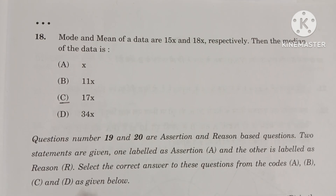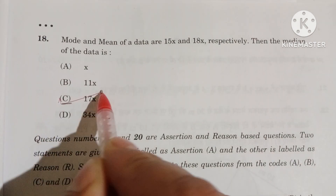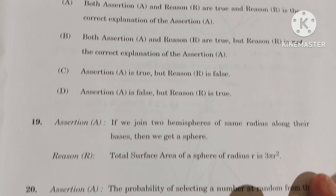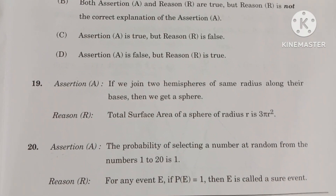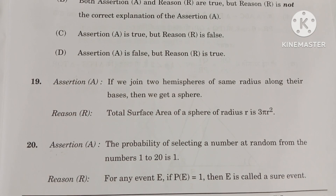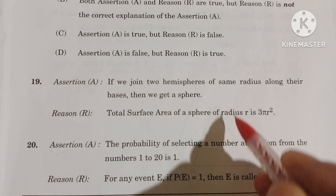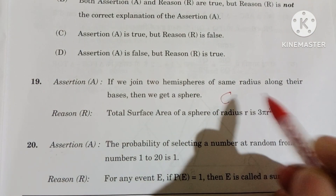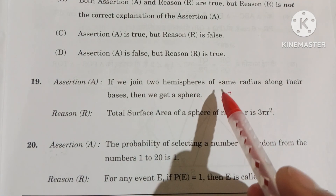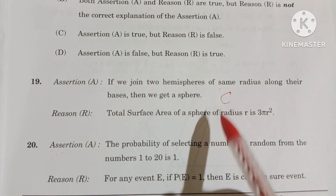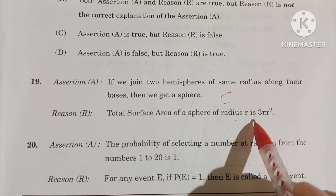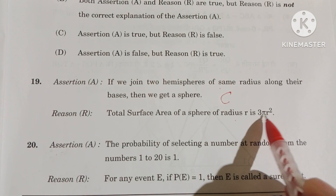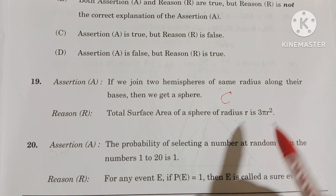Question number 18: C option is the correct option. In question number 19, C option is the correct option. Assertion is true, but reason is false, because the surface area of a sphere is 4πr².